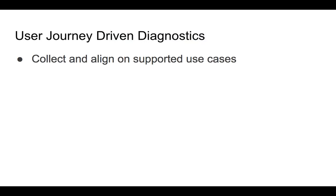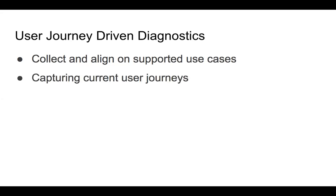The zero step is collecting and agreeing on what the supported use cases are — basically just having a list of what the user is trying to do when diagnosing a Node.js process. Then we identify which are the really important ones we have the energy to go after in the first round. I'm pretty sure use cases like embedded systems or test runners have different needs than a Node.js worker running APIs, but probably we should go after those that affect the most Node.js users in the first round.